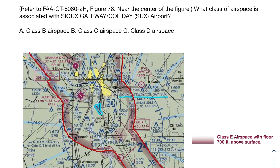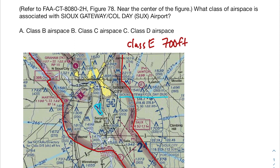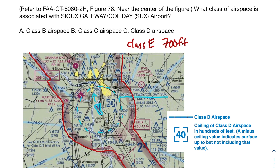That red shading, of course, means class E starting at 700 feet. However, when you're doing these problems, you want to make sure you're starting at the airport and moving outward, because there might be an airspace that's a little bit closer. Starting at the airport, you'll notice there is a dashed circle around it. Looking at our legend, that dashed circle means this is actually class D airspace, and the broken-up square inside tells you it goes from the surface up to 3,600 feet.